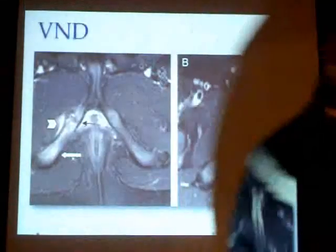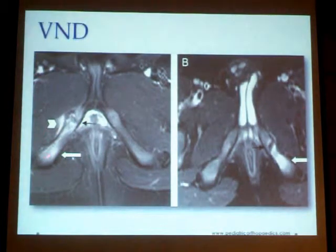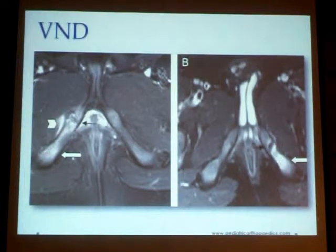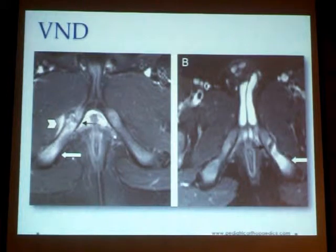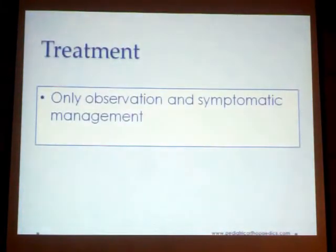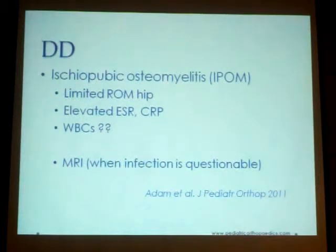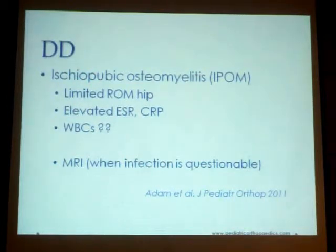This reflects the concept that this is mostly due to abnormal tension on the ischium and ischiopubic ramus. Sometimes edema of the surrounding soft tissue and muscles may be present. The treatment is only observation and symptomatic management; stretching of the hamstrings may improve the patient's complaint. The most important differential diagnosis is ischiopubic osteomyelitis, in which there is limited range of movement of the hip.